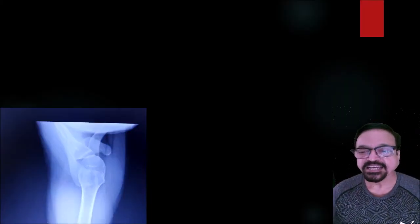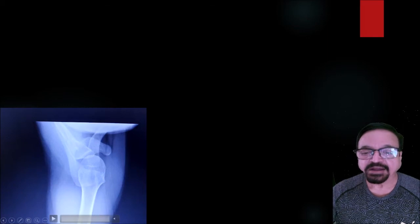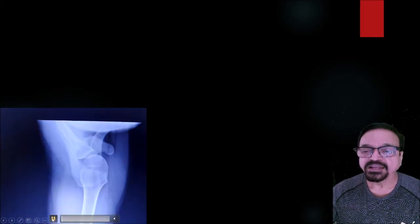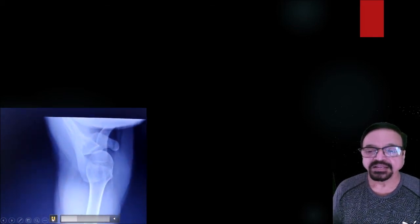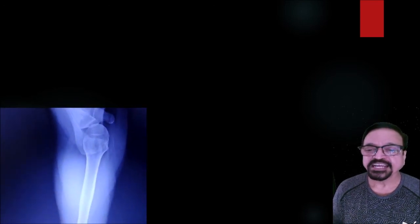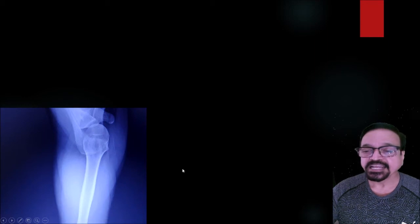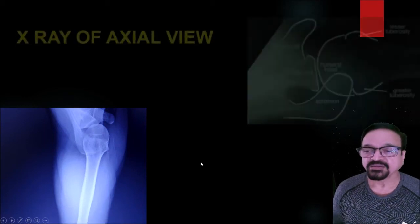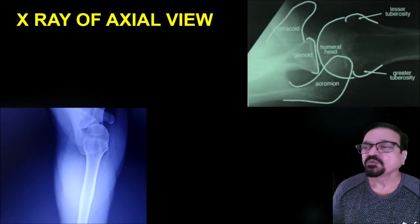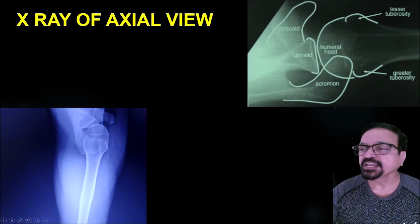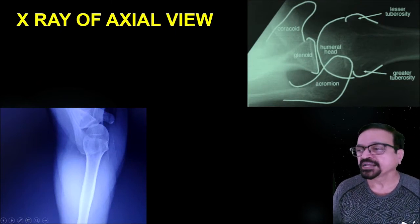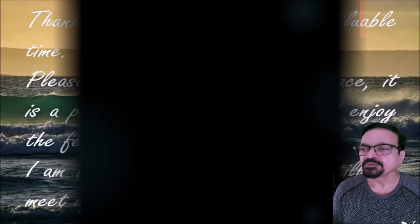Now you are seeing it here. The advantage of DR — you can immediately see the result. We are showing this because it is the same patient whose x-rays were just taken. Here you are seeing a perfect axial in which the coracoid process, acromion process, and head are all well seen. What you see here is the coracoid, glenoid, acromion, and humerus. The tuberosities — both lesser and greater — are also well seen.